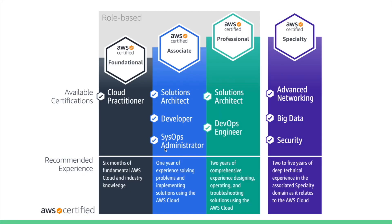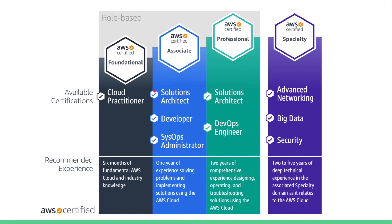Now in AWS, there are multiple certifications available. You can start off with the Cloud Practitioner — for that, AWS recommends six months of fundamental cloud knowledge and some industrial knowledge. The certification we are targeting today is at the associate pillar: AWS Certified Solution Architect Associate Examination. There are also two other certifications under this pillar — Developer and SysOps Administrator. Once you have passed the Certified Solution Architect Associate Examination, you can easily pass the Developer as well, and with an extra bit of networking knowledge, you can pass the SysOps Administrator Exam too. So you can start off with any of these certifications and easily pass the other two with minimum effort.